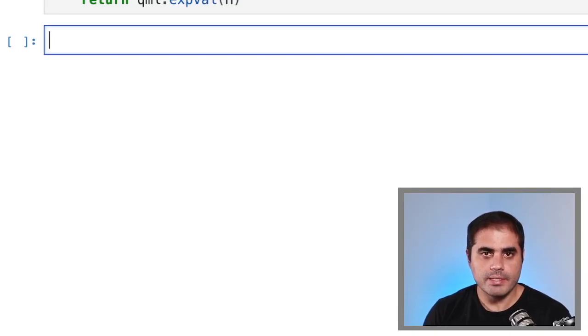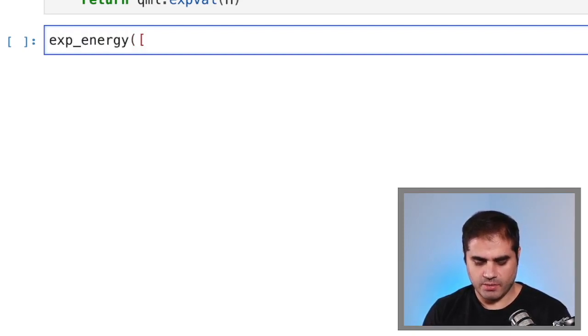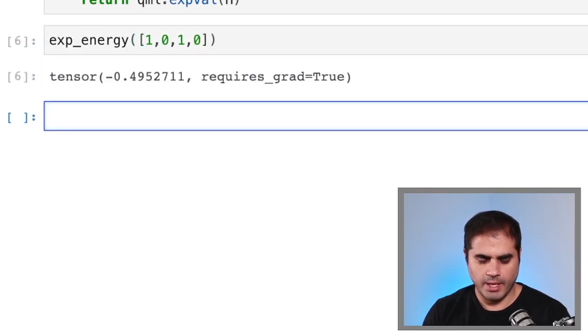So now let us see what this function returns for some states in the Jordan-Wigner representation. So we could write, for example, exp_energy of a state that has one electron in the first energy level, and one electron in the second energy level, both with spin up.